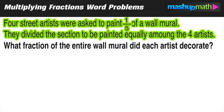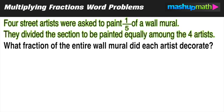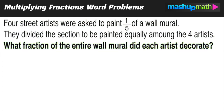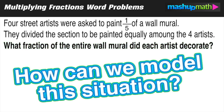Thank you for stopping by and joining me on this problem. We have four street artists who are asked to paint one-fifth of a wall mural, and they are dividing the section to be painted equally among the four artists. Our task is to find what fraction of the entire wall mural each artist decorated. Let's ask ourselves: how can we model this situation? We don't have a diagram here.